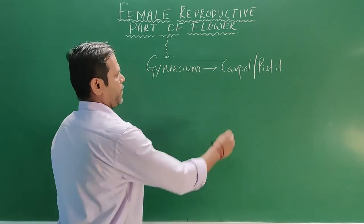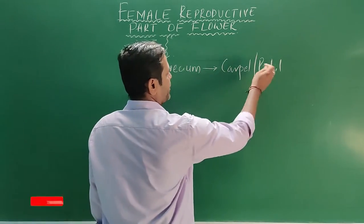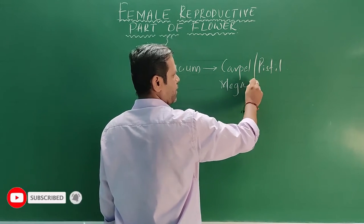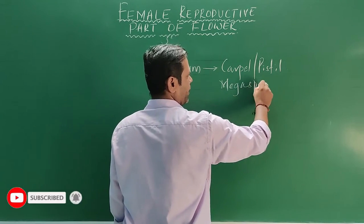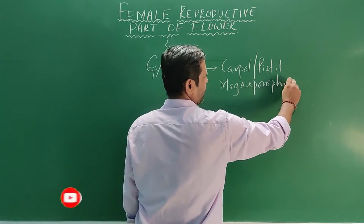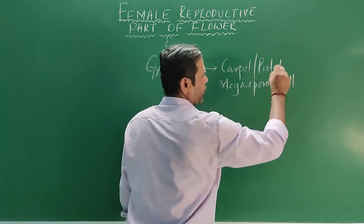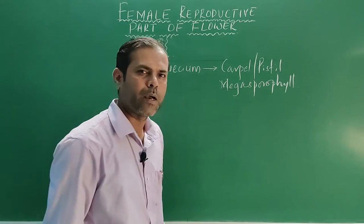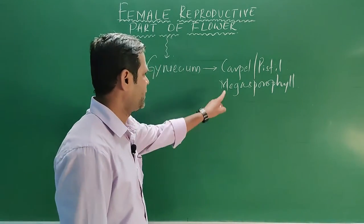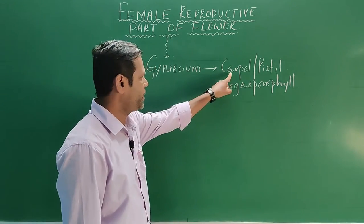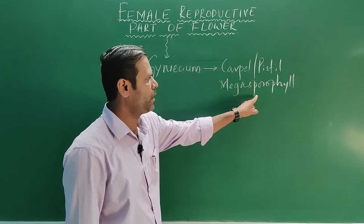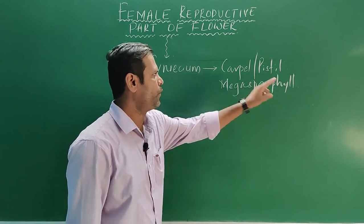This carpel or pistil is also known as macrosporophyll. Stamen — the male reproductive part — is the microsporophyll, and pistil or carpel is also known as macrosporophyll.